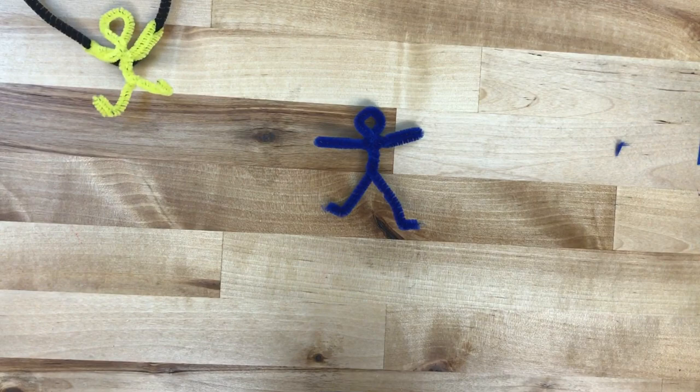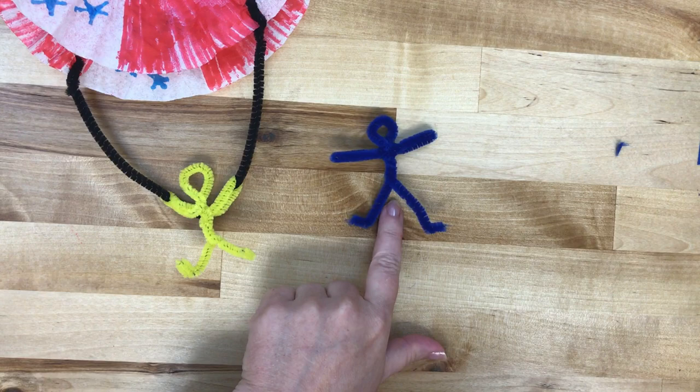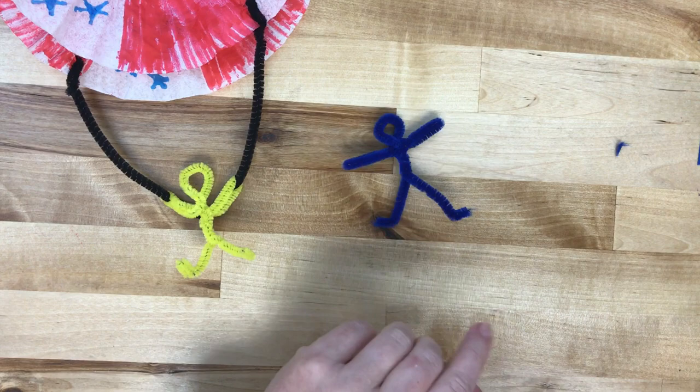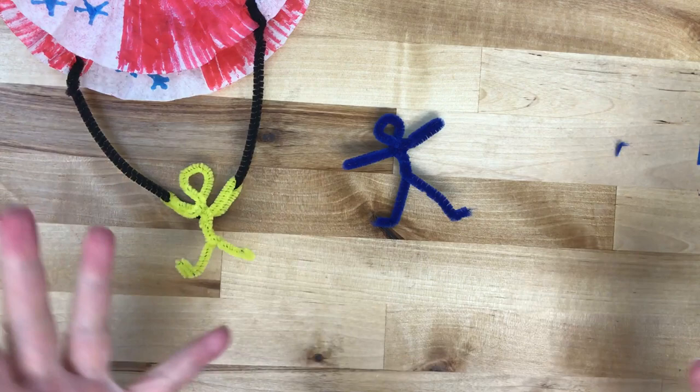Now when you're making the coffee filter parachute guy you only want to make the stick figure out of one fuzzy stick. If you use two it's going to be too heavy. So the second fuzzy stick is the harness.